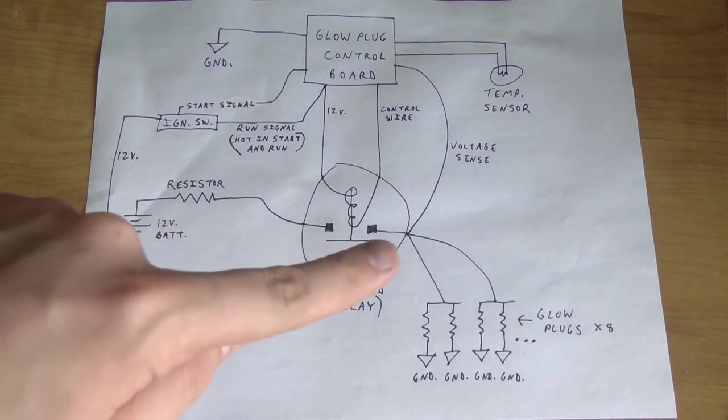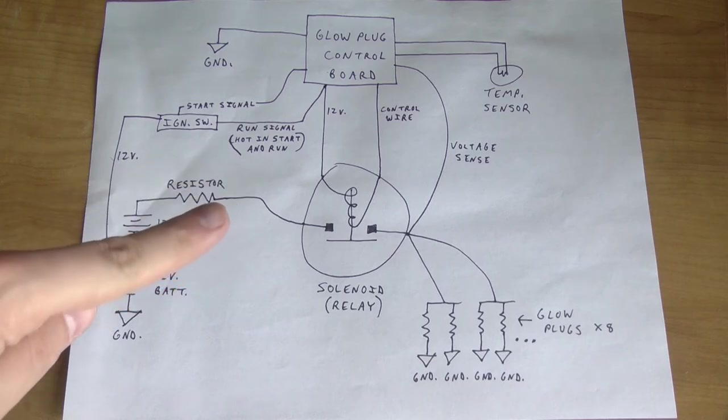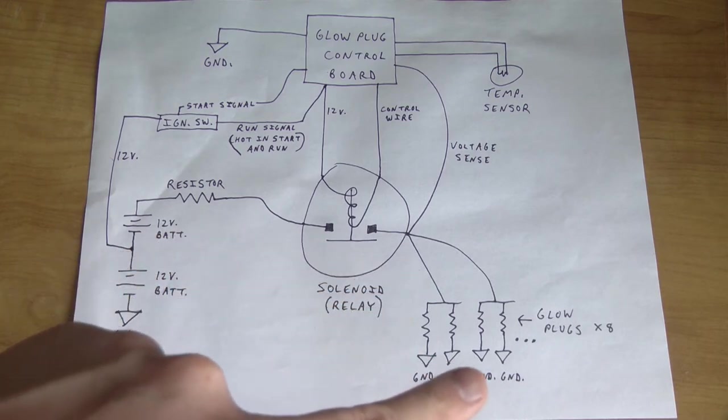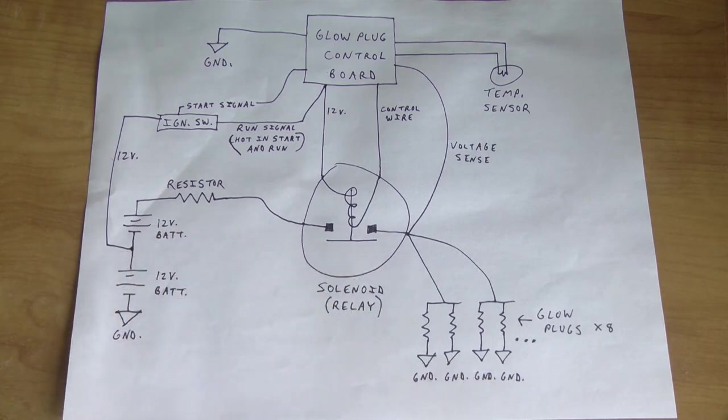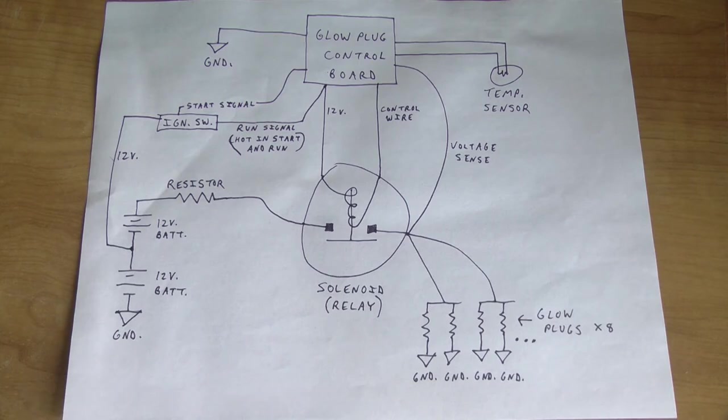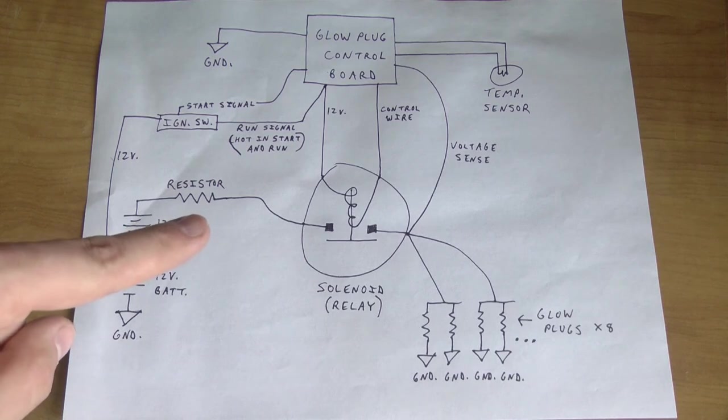Resistors limit current. They don't regulate voltage. So this resistor is like a restriction in the line that powers these glow plugs. Because these need to see about 10.5 volts. If all of these eight glow plugs are all in circuit and all working properly, the resistance of the glow plugs balances with the resistor that's on the firewall. And the system works normally.